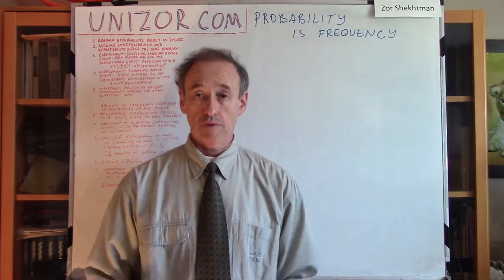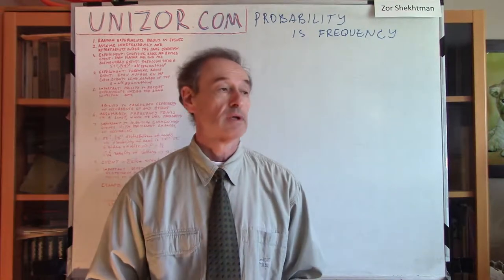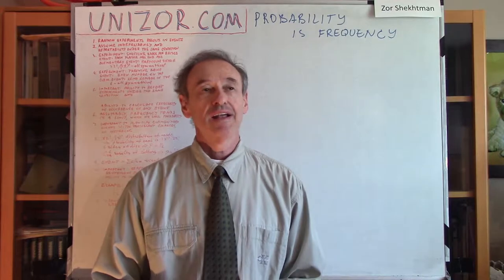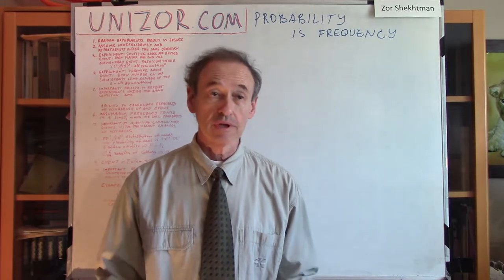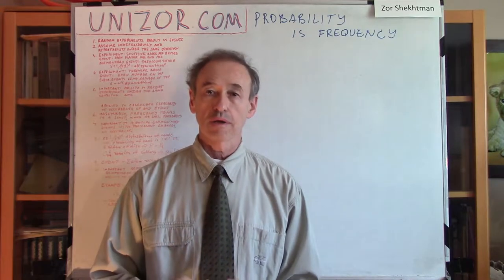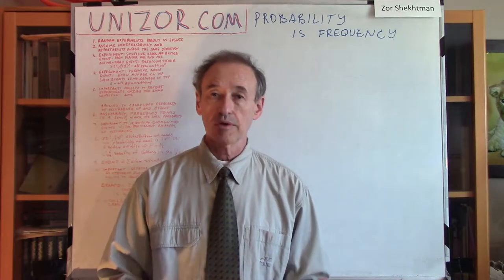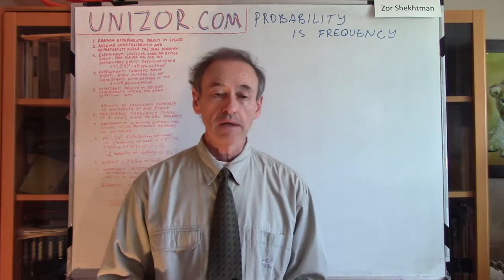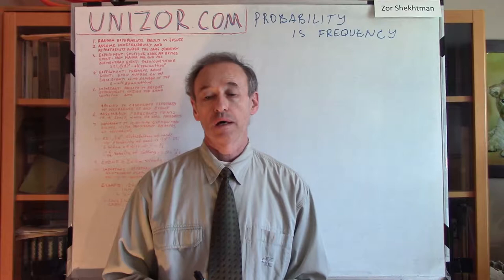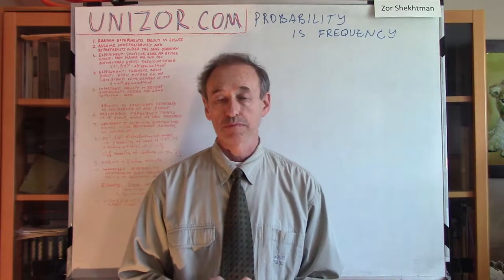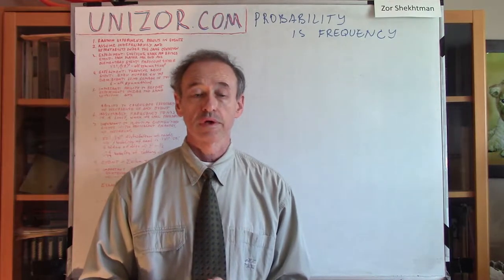Everybody knows what probability is, right? You flip the coin and everybody can say that the probability of tails and heads is one half or 50%. Well, yes and no. About two or three hundred years, mathematicians were struggling with attempts to rigorously define probability. The final mathematically rigid approach was the foundations of theory of probabilities, which were laid down by mathematician Andrey Kolmogorov in a 1936 article — the basic principles of theory of probabilities.